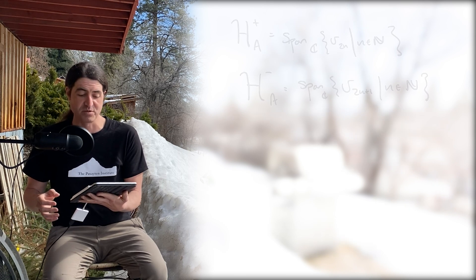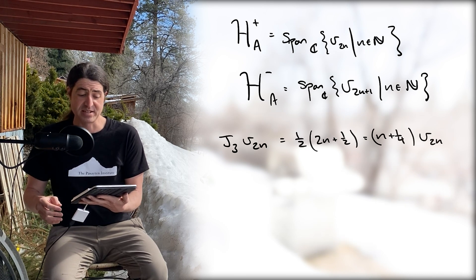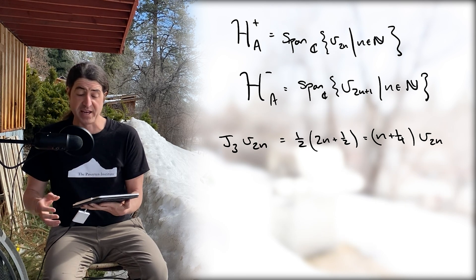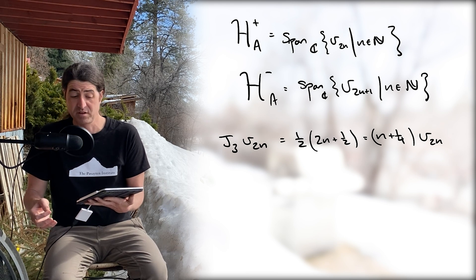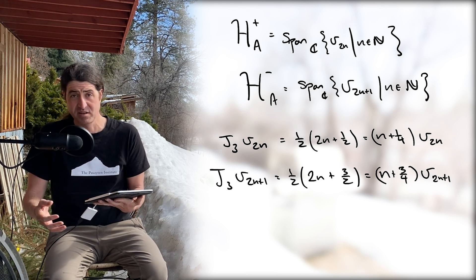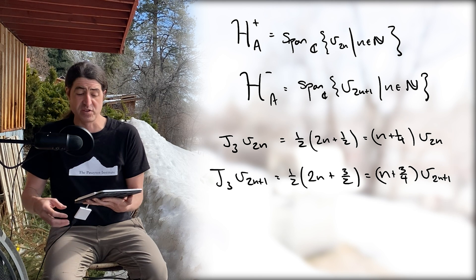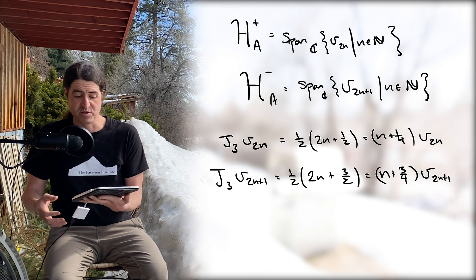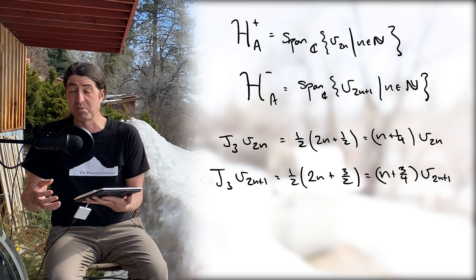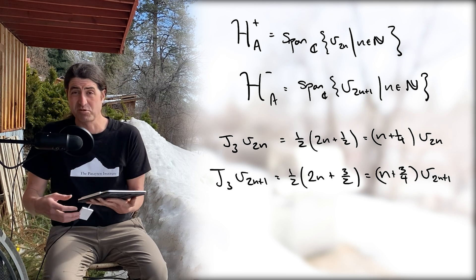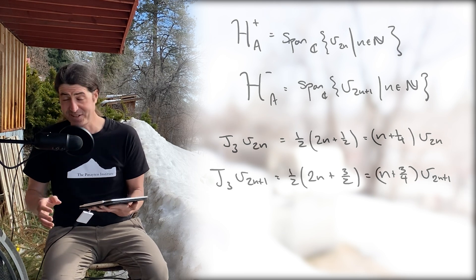Therefore, the even module under SU(2), H_A(2n), has the J3 eigenvalues given by n plus one fourth, where n is some natural number. The odd J3 eigenvalues for the odd irreducible representation H_A(2n+1) are given by n plus three fourths.